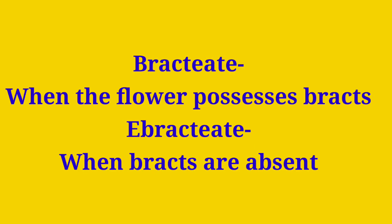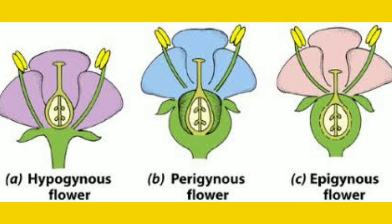Now comes an important terminology based on the position of calyx, corolla, and androecium on the ovary of the thalamus. The ovary is part of the inner whorl of the flower — that is, part of the gynoecium. When the calyx, corolla, and androecium arise from the upper or lower part of the ovary, the flowers are divided into three types: hypogynous, epigynous, and perigynous.